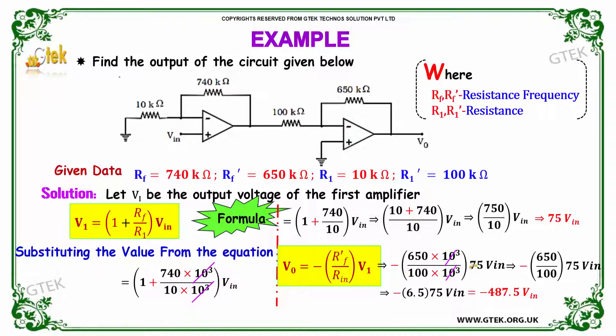You got the value as, as you know, V1 is equal to 75 Vin. So Vin is substituted with 75 Vin. Telling this one, you got 650 divided by 100 into 75 Vin. The value is minus 6.5 into 75 Vin. You got the value as minus 487.5 Vin.